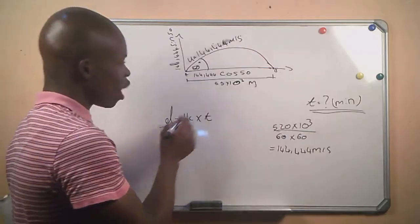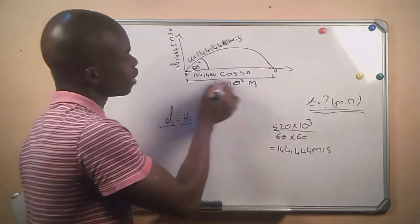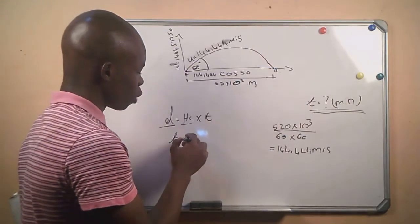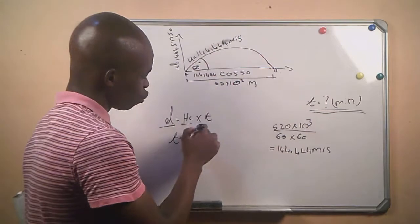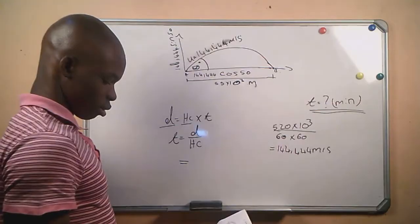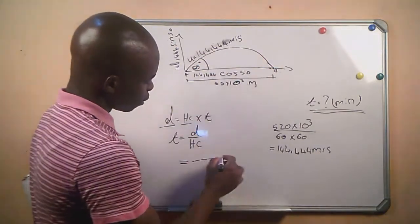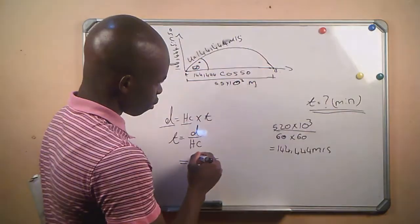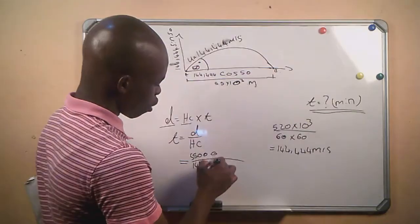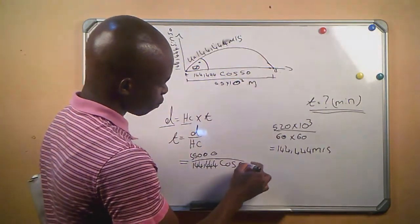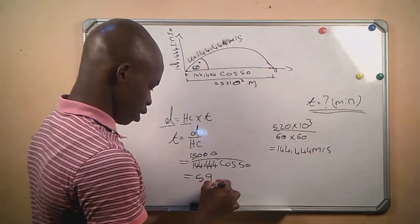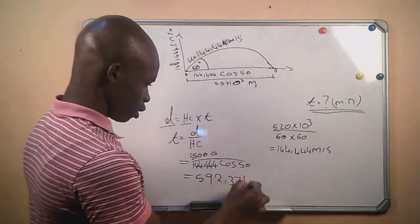Making t the subject gives us: t = displacement ÷ horizontal component. Substituting the values: t = 55,000 ÷ (144.444 × cos 50°), which gives us a value of 592.374 seconds.